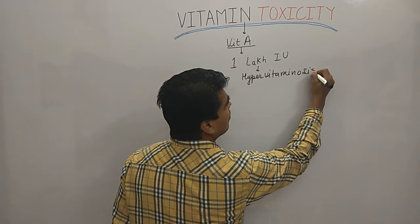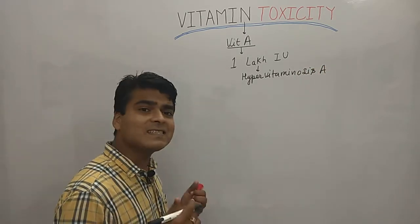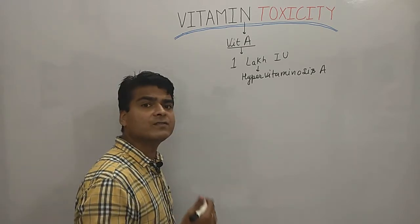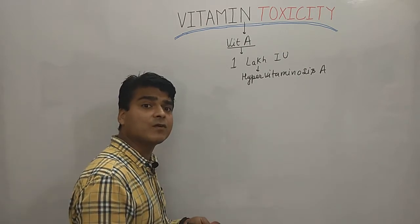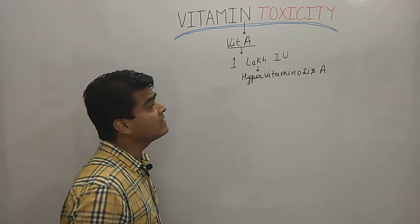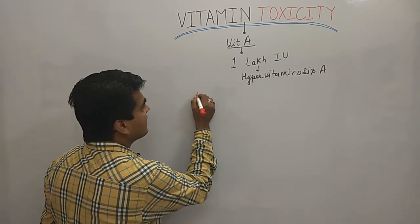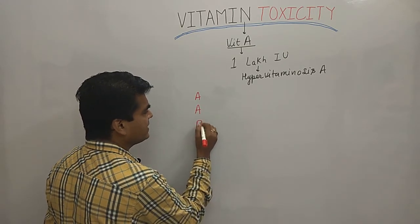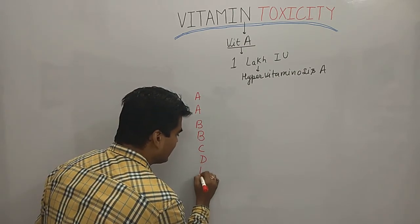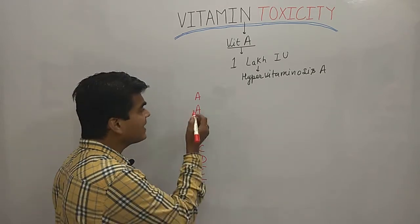Hypervitaminosis A is the name of this disease. Now, what are the symptoms? I am giving you a mnemonic trick to learn the symptoms: A², B², C, D, E² — that is A-squared, B-squared, C, D, and E-squared.